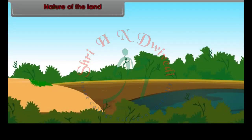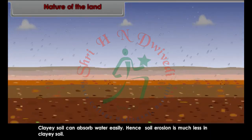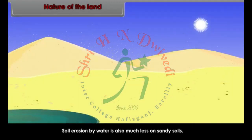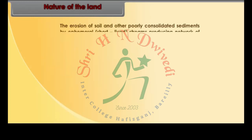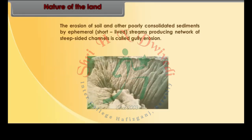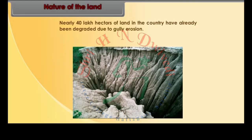Nature of the land is one of the important factors for soil erosion. Clay soil can absorb water easily; hence, soil erosion is much less in clay soil. Soil erosion by water is also much less on sandy soils. Gully erosion: the erosion of soil and other poorly consolidated sediments by ephemeral — that is short-lived — streams producing a network of steep-sided channels. Nearly 40 lakh hectares of land in the country have already been degraded due to gully erosion.